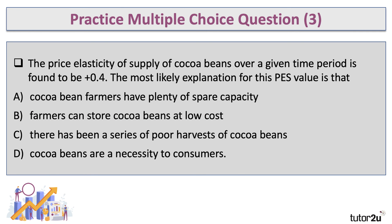Question three: the price elasticity of supply of cocoa is found to be plus 0.4. What's the most likely explanation for this value? A value of 0.4 is relatively low — it's inelastic — so we're looking for the reason producers are unable to get cocoa beans to market when price or demand goes up. The right answer is C: there has been a series of poor harvests. Poor harvests mean stock levels of previously harvested cocoa beans will be low, and when stocks fall, supply becomes inelastic.